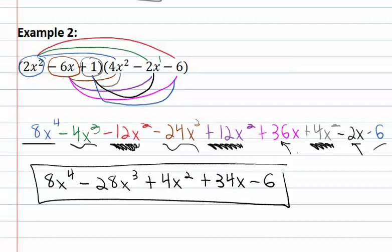Which we are able to find by taking each term from the first polynomial and distributing it onto each term in the second polynomial. Take each term!